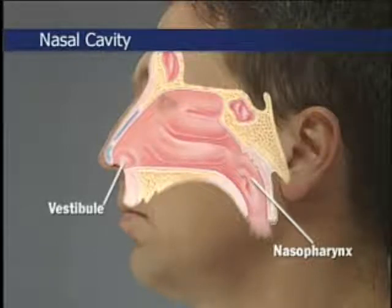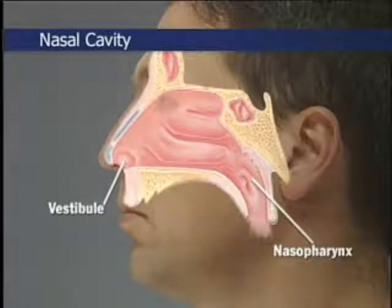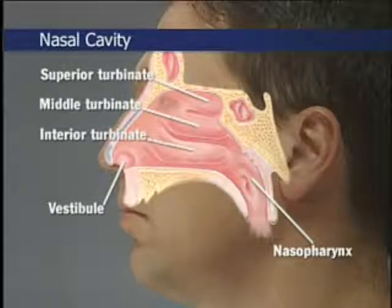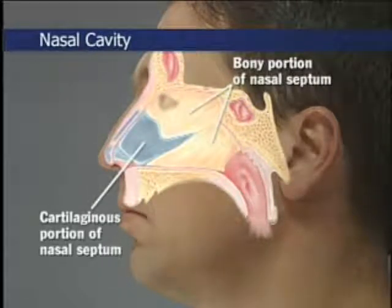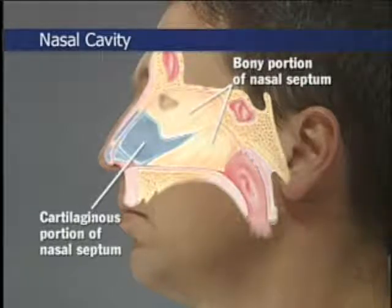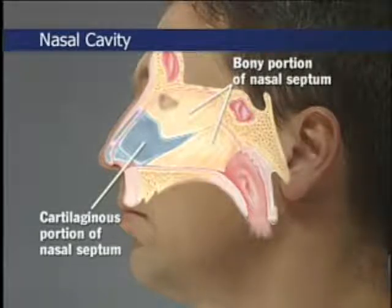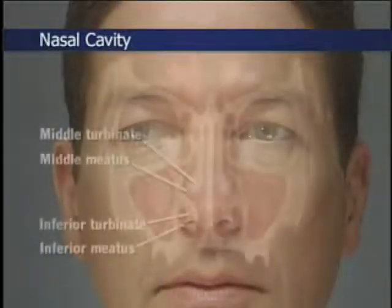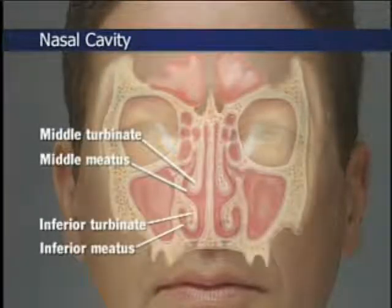The vestibule, unlike the rest of the nasal cavity, is lined with hair-bearing skin rather than mucosa. Protruding into the nasal cavity are the turbinates — curving bony structures covered by a highly vascular mucous membrane. The nasal septum forms the medial wall of each nasal passage and, like the external nose, is supported by both bone and cartilage. The medial wall is covered by a mucous membrane well supplied with blood.